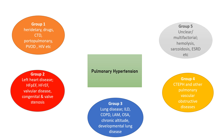Group 5 is made up of pulmonary hypertension with unclear etiologies such as hemolytic anemias, sarcoidosis, metabolic disorders, and chronic renal failure, amongst others.